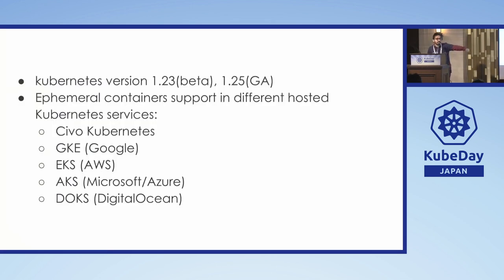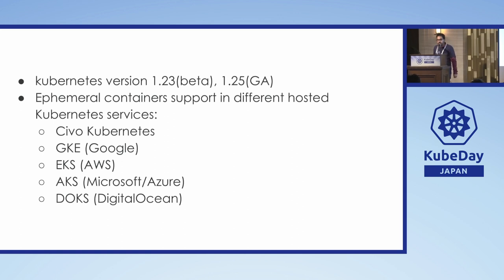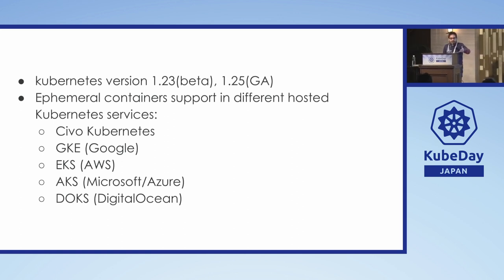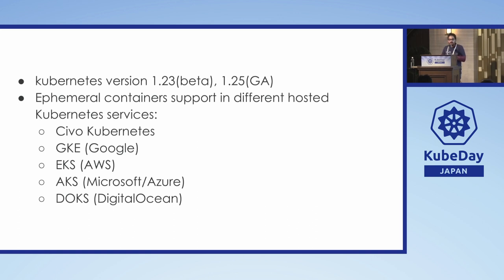Ephemeral containers were a fantasy before when trying to use slim, scratch, and distroless images. There has been a lot of work to get native ephemeral container support into Kubernetes, and it went GA in 1.25. Local clusters like Rancher Desktop or Docker Desktop should work. Cloud providers — CIVO, GKE, EKS — all have 1.23 onwards, so you should be able to use these kubectl debug demos with those clusters as well.